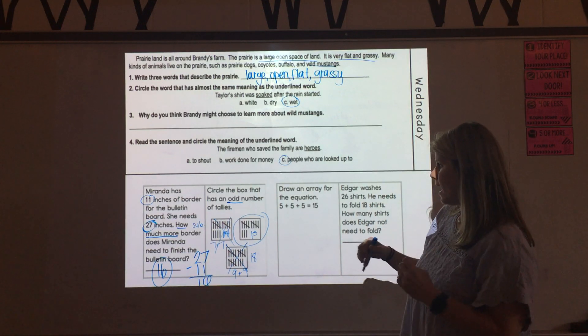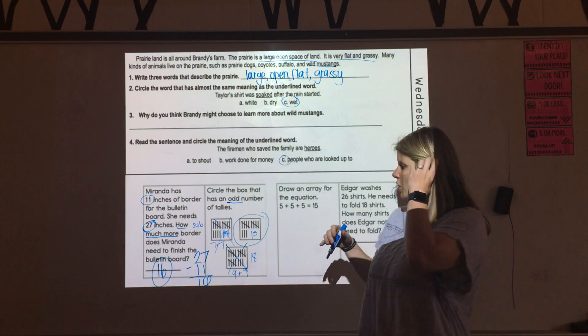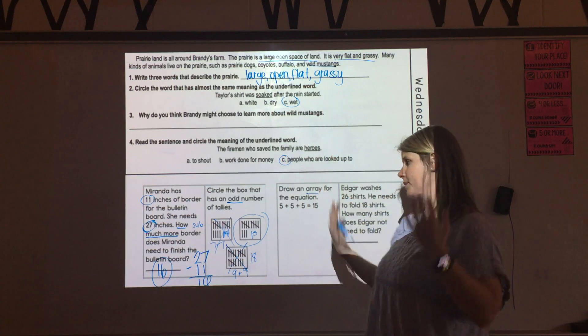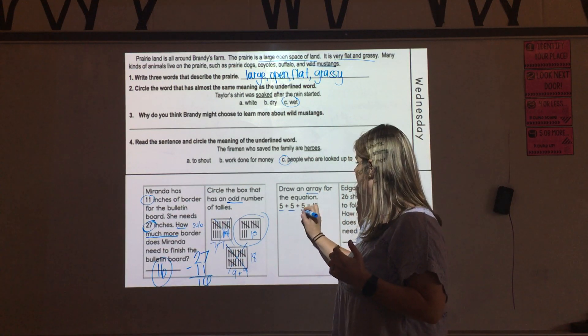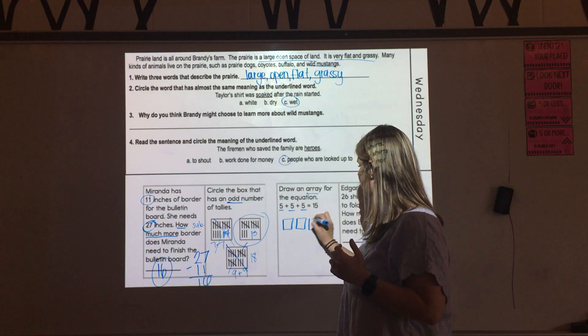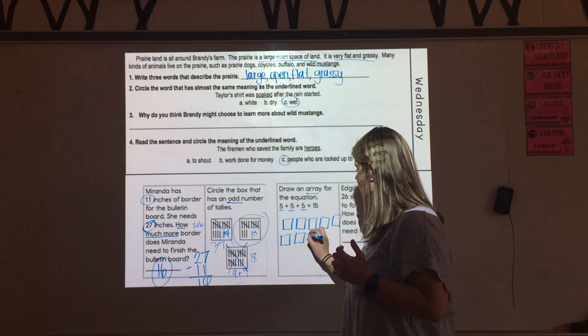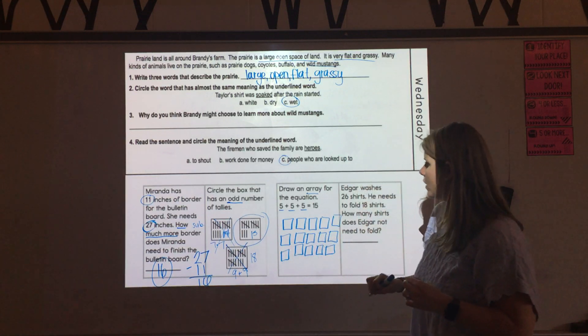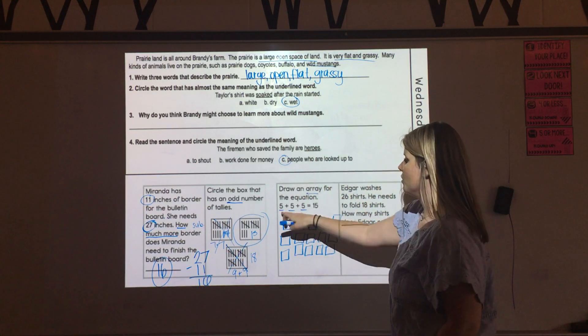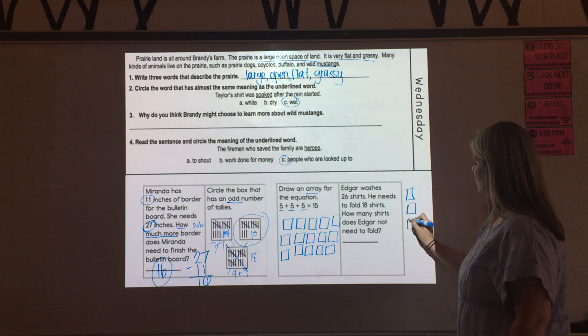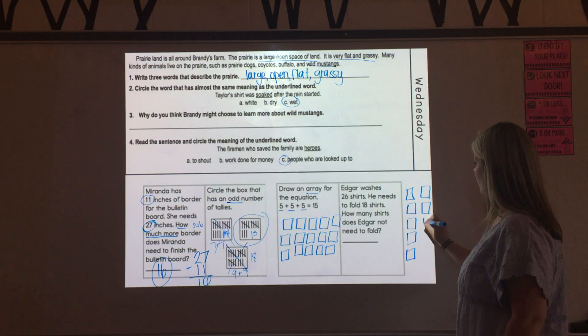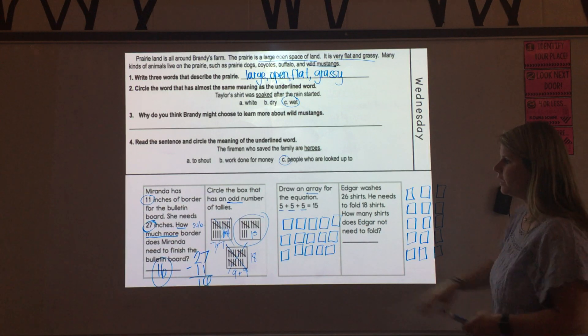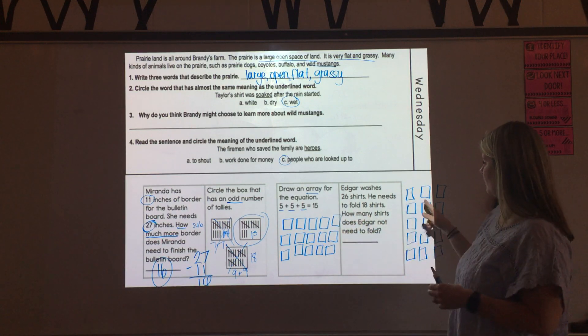Next here, we've got to draw an array for this equation. 5 plus 5 plus 5 equals 15. So an array, remember, is a picture that we draw with equal rows that go from side to side and columns that go up and down. So we could do three rows of 5. So 1, 2, 3, 4, 5. 1, 2, 3, 4, 5. 1, 2, 3, 4, 5. Or we could flip this and do three columns of 5, which would just be the same thing, just drawing it as columns, three columns up and down as 5. So a couple ways you could answer that one. As long as you have equal rows and equal columns and it adds it to 15 with three sets of 5 somewhere, you're good to go.